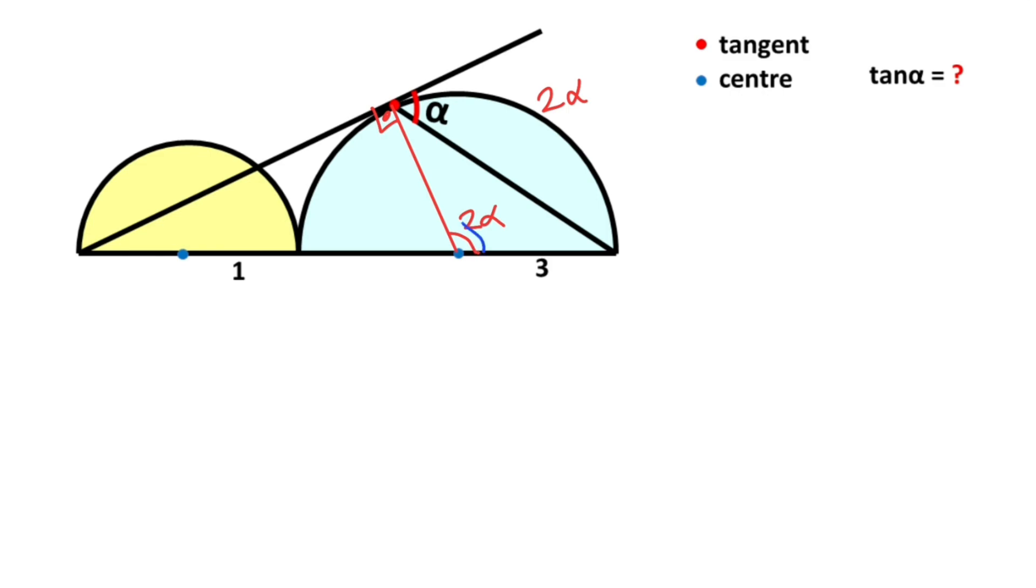We know that a straight angle equals 180 degrees, so 180 minus 2α is left here. And here is the radius of the blue semicircle. This length is also radius. Likewise, if here's 1, that means here is also 1 unit.